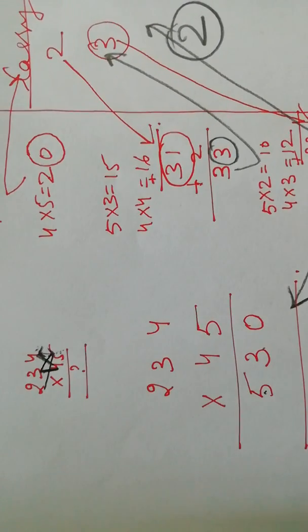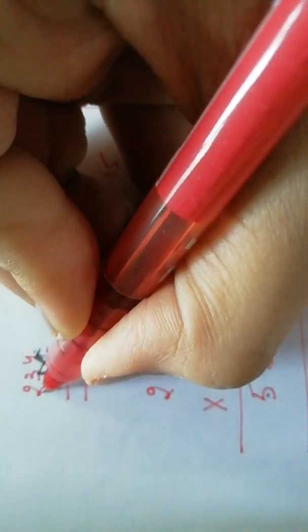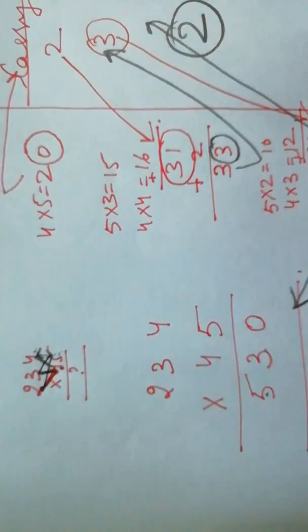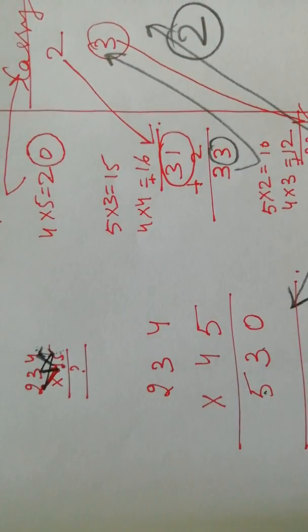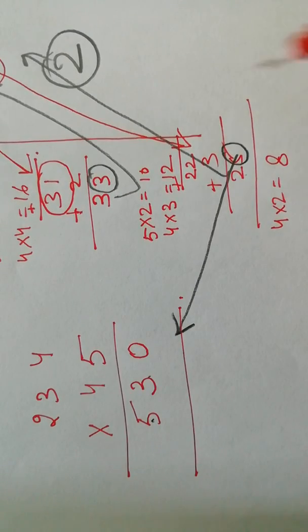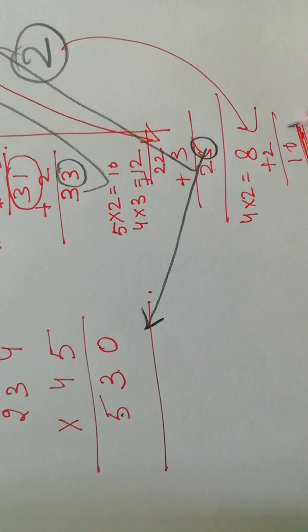Now the last step is to multiply this digit with this digit, which is 4 and 2 here. So what do we get? 4 and 2 is 8, we get 8. And adding the carry to this number, which is 10.